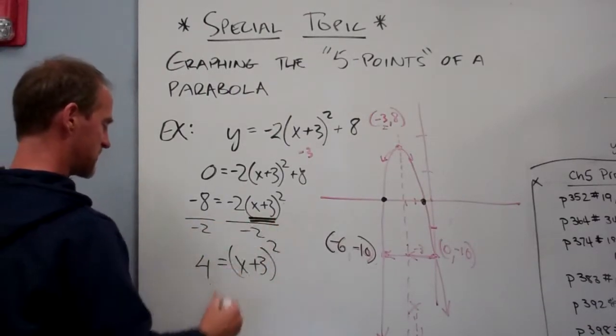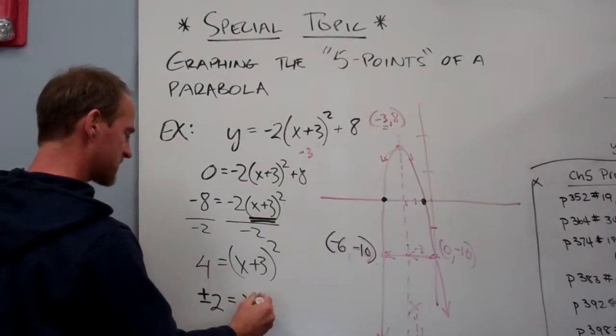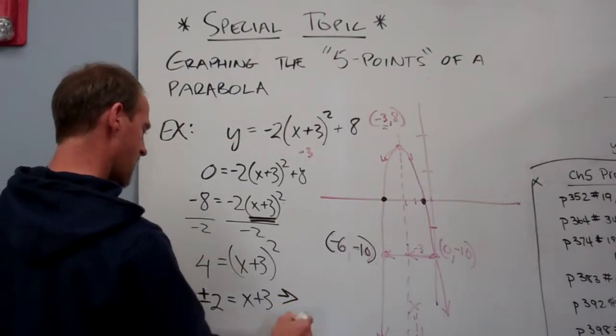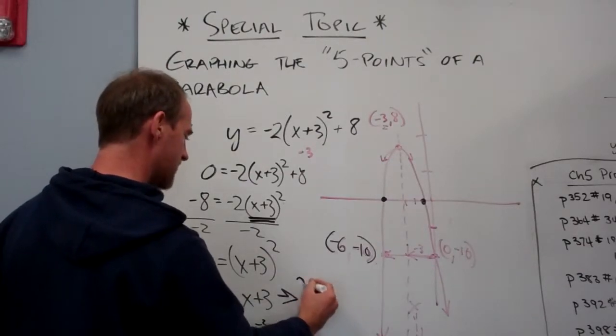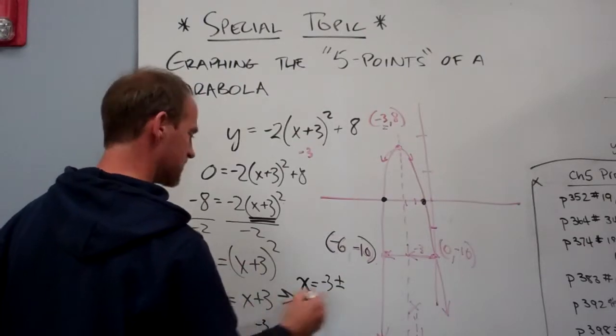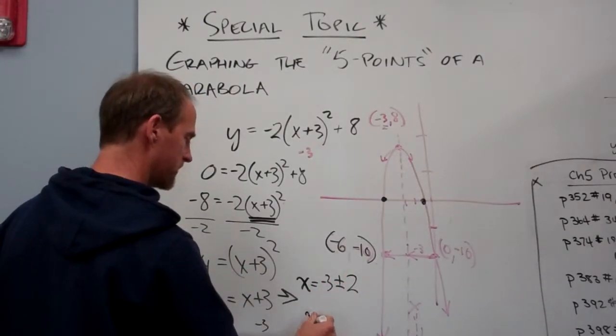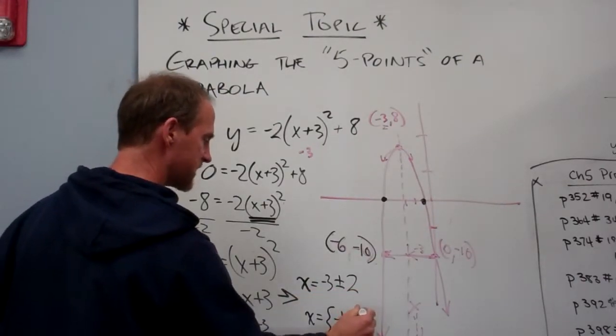I get a positive 4 then is equal to x plus 3 squared. Well, when I square root both sides, I'll get plus or minus 2 is equal to x plus 3. And that's going to be, if I subtract 3 from both sides, I'll get x being equal to minus 3 plus or minus 2. Well, negative 3 plus 2 is negative 1. Negative 3 minus 2 is negative 5.